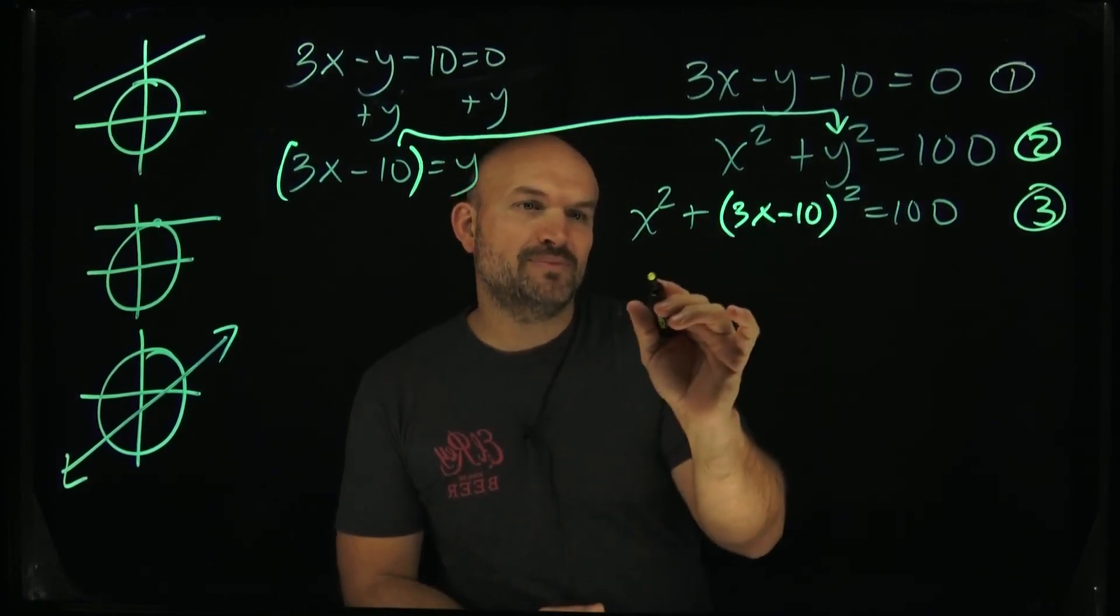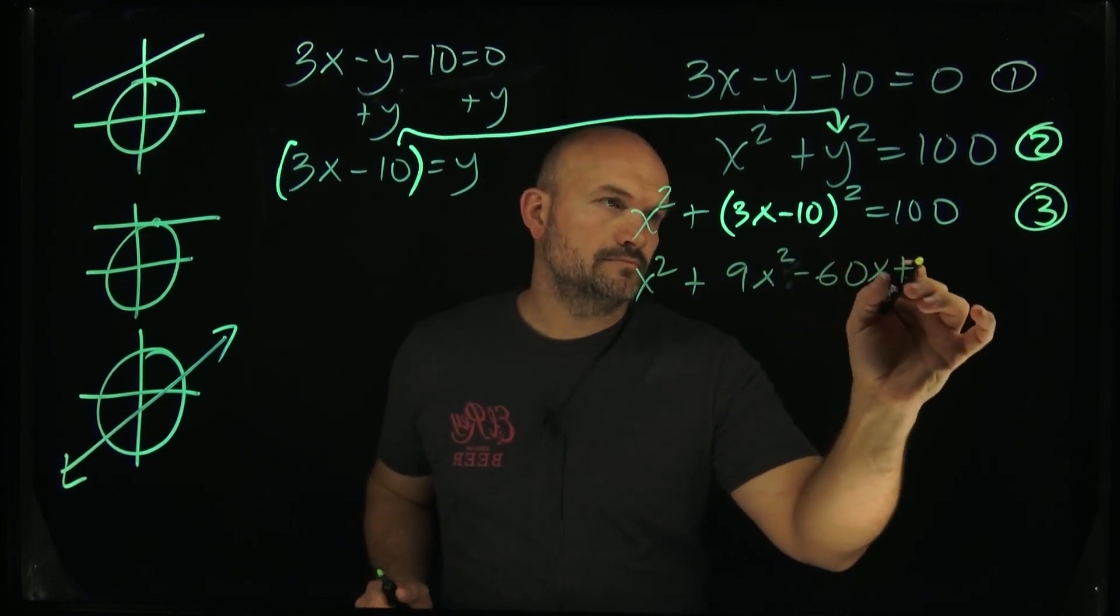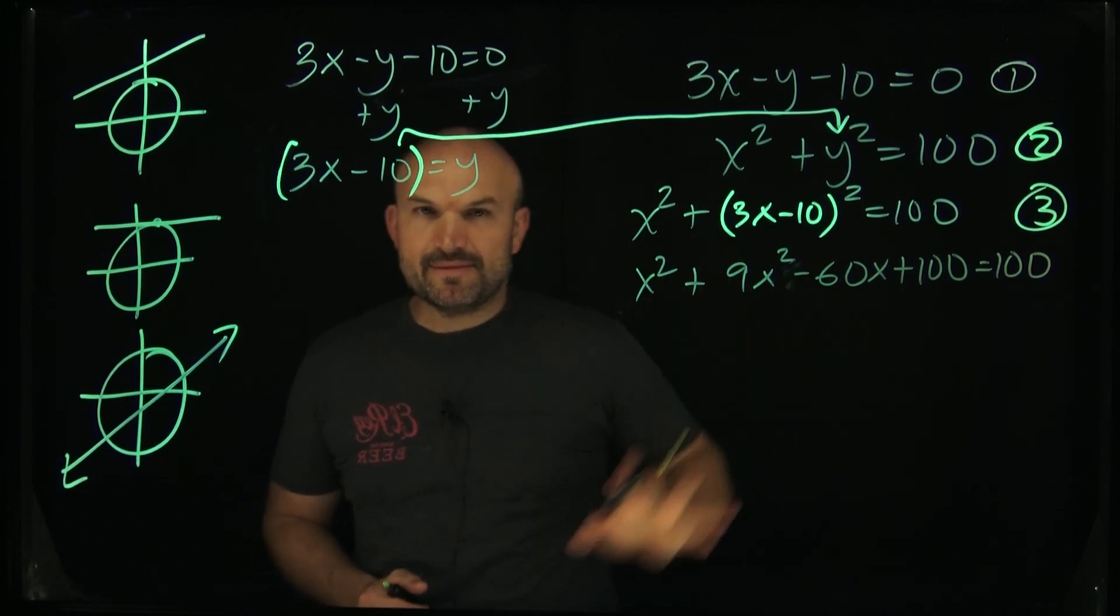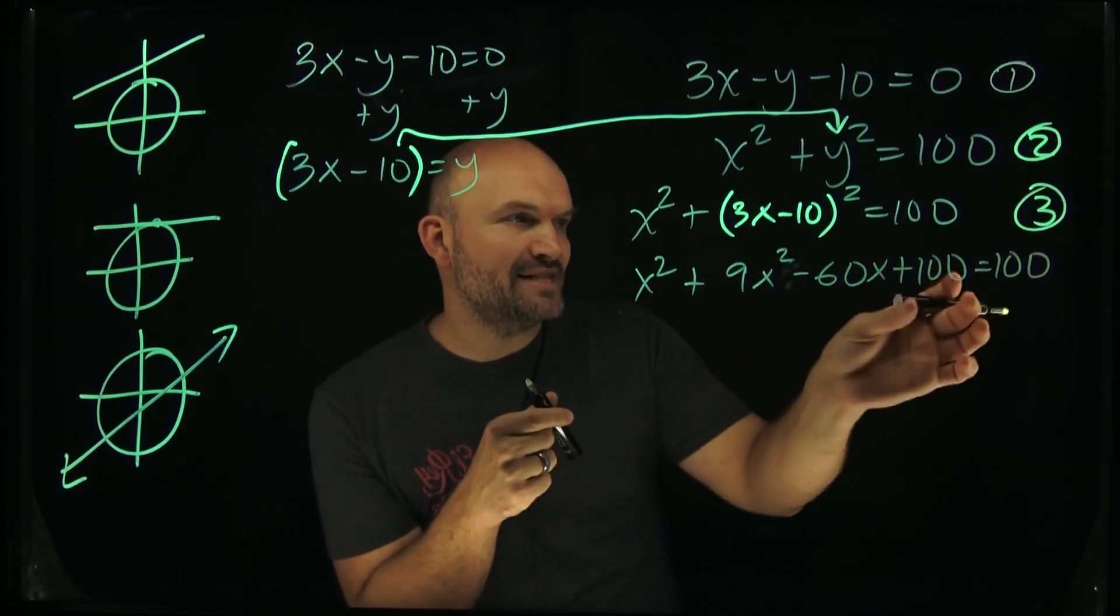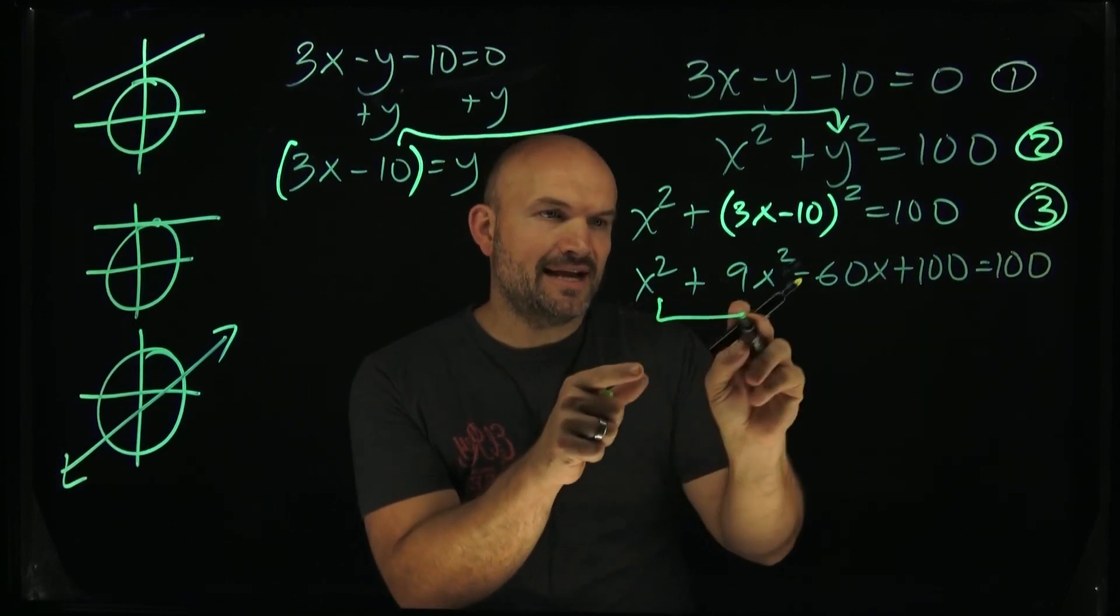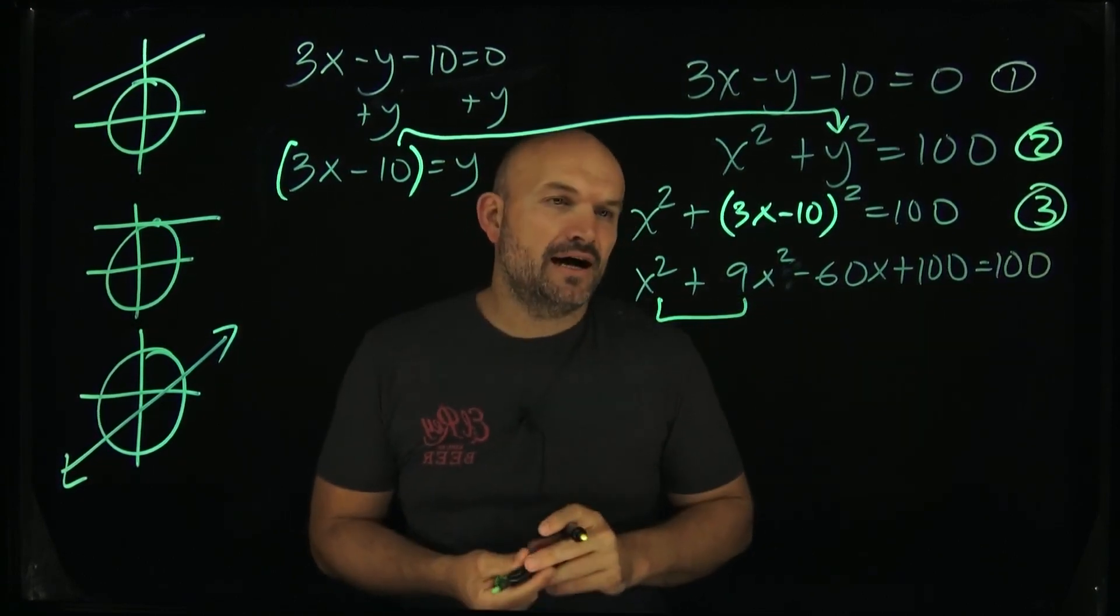Let's go ahead and multiply this out. So I'll get x squared plus... Now this might look like pretty big numbers, but here's the cool thing. If I subtract the 100 on both sides and then combine these two together, I'm actually going to get a pretty simplistic equation.